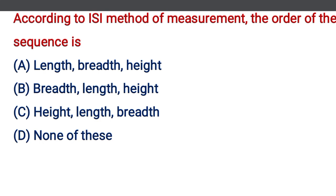According to ISI method of measurement, the order of the sequence is — option A: length, breadth, height; option B: breadth, length, height; option C: height, length, breadth; option D: none of the above. The correct answer is option A, length, breadth, and height.